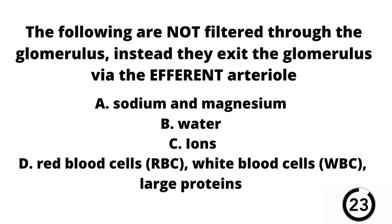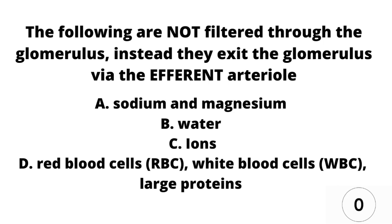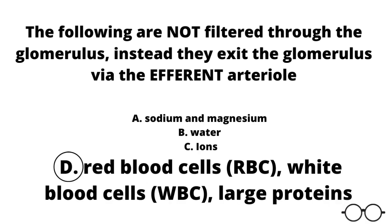Question number 11. The following are not filtered through the glomerulus. Instead, they exit the glomerulus via the efferent arteriole. A sodium and magnesium, B water, C ions, D red blood cells, white blood cells, and large proteins. Our answer here is D — red blood cells, white blood cells, and large proteins are not able to be filtered through the glomerulus because they don't fit — they're too big. So instead, they go out with the blood flow of the efferent arteriole.